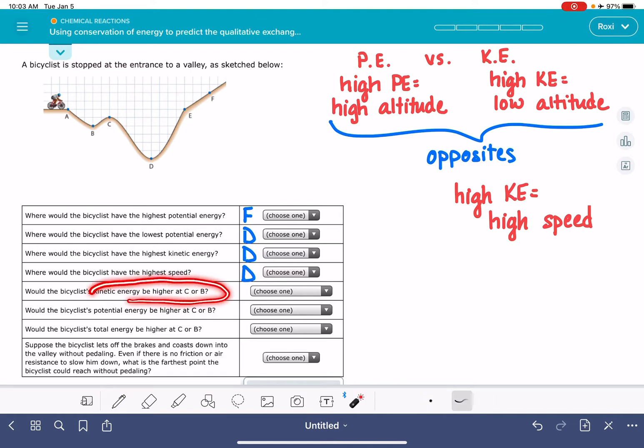Would the kinetic energy be higher at C or B? So that's these points right here. I always find it easier to be thinking about this in terms of potential energy. So let's take these two points and figure out which one has the higher potential energy. C, because it's higher, has the higher potential energy compared to B.